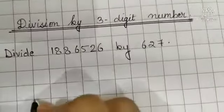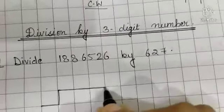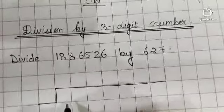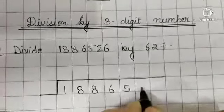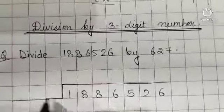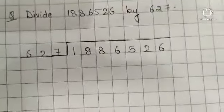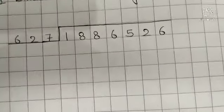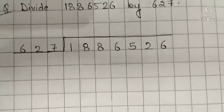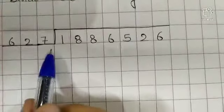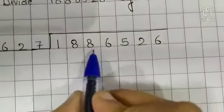Let's solve this question. 1, 8, 8, 6, 5, 2, 6. 627. Done. Now see, divisor 627 is greater than three-digit of dividend 188, so we consider four digits: 1, 8, 8, 6.